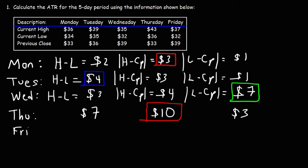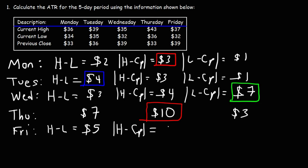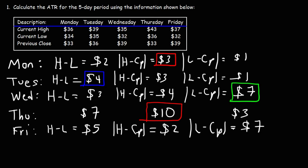Now let's move on to Friday. The current high minus the current low is 37 minus 32, which is $5. The current high minus the previous close is 37 minus 39, which is negative 2 — so positive 2. The current low minus the previous close: the low is 32, the previous close is 39, so that's a difference of 7. The highest value for Friday is 7.